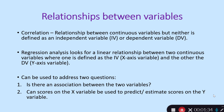We're talking about relationships between variables again. Last session we looked at relationships between continuous variables where neither is defined as an independent or dependent variable, and we used correlation. In this session we cover regression analysis, which looks to see if there is a linear relationship between two continuous variables where one is defined as the IV — the independent variable — and the other as the DV, or dependent variable.